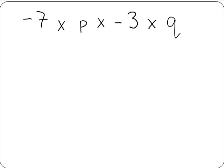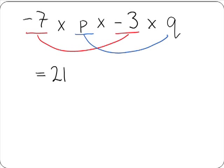Our final example is minus 7 multiplied by p multiplied by minus 3 multiplied by q. We multiply our numbers: minus 7 multiplied by minus 3. When we multiply a minus by a minus, we remember we must get a plus. So minus 7 by minus 3 gives us plus 21. Then we multiply our letters: p multiplied by q gives us pq. So we are left with 21pq.